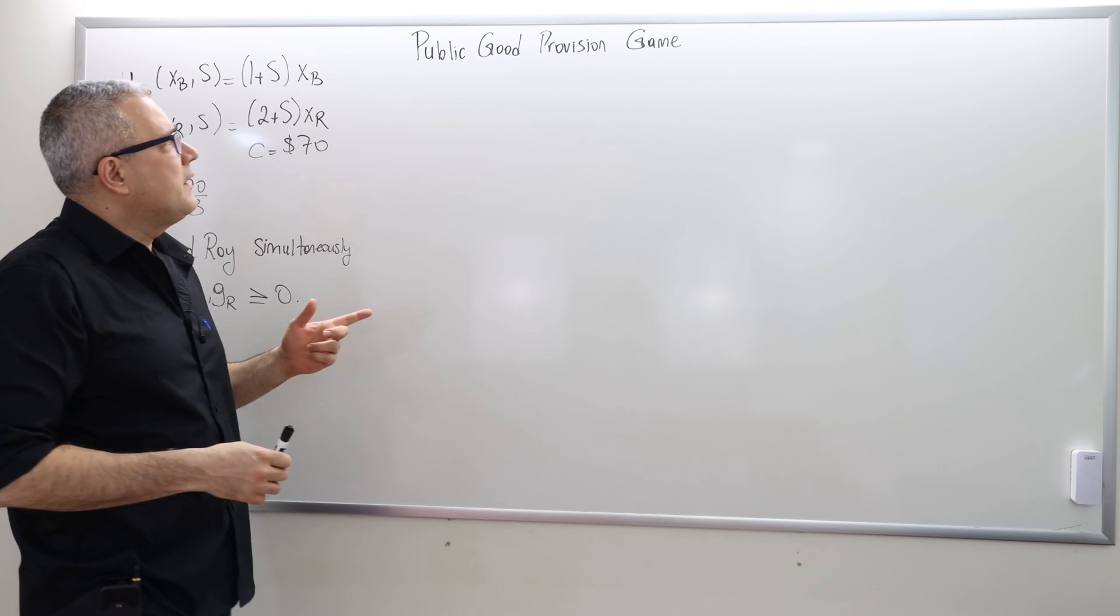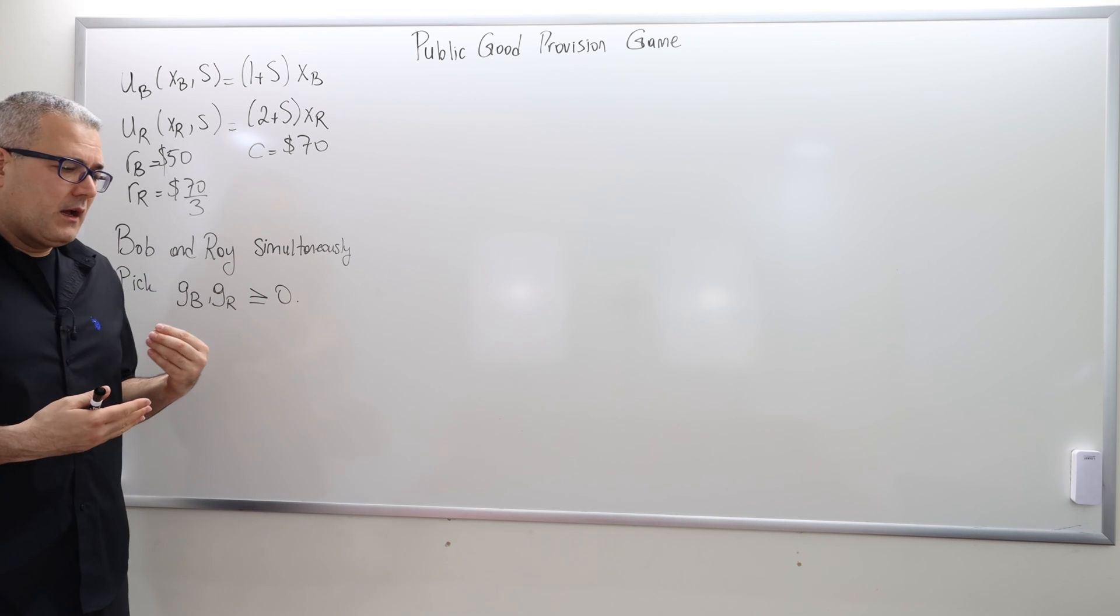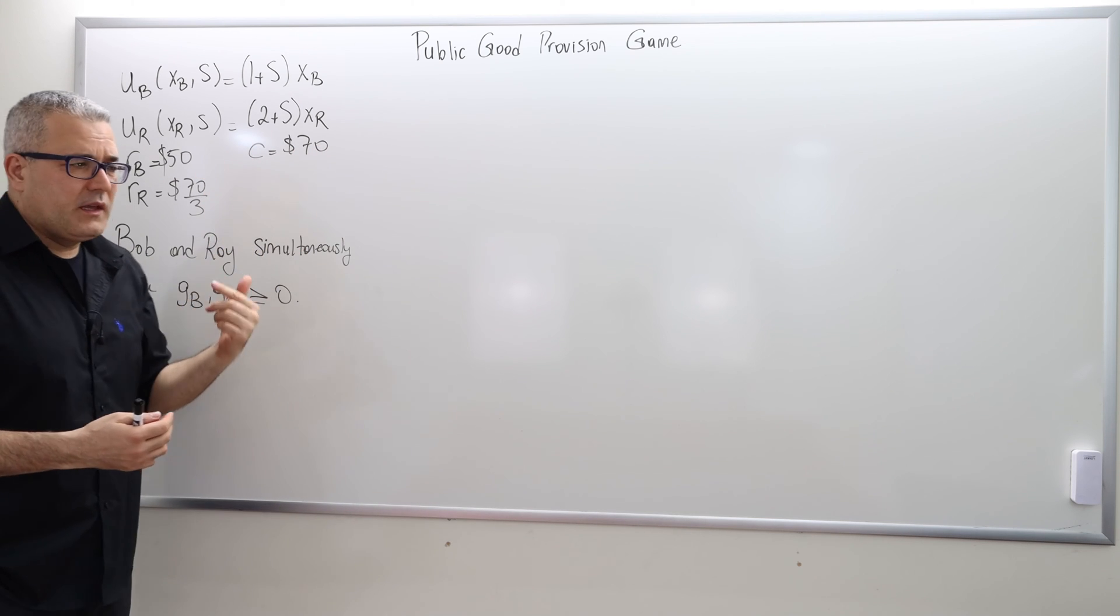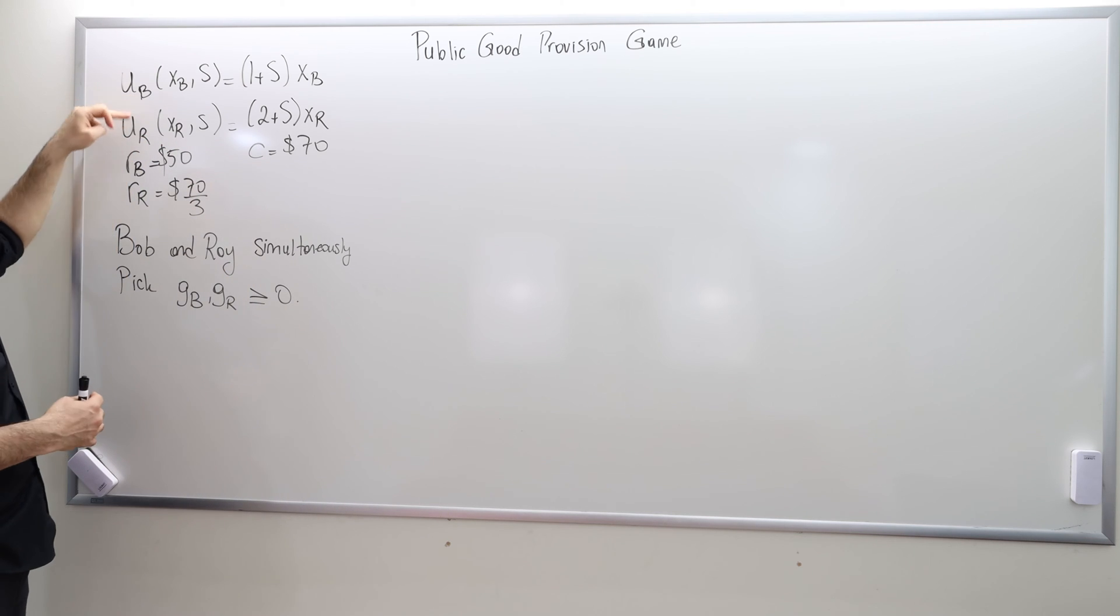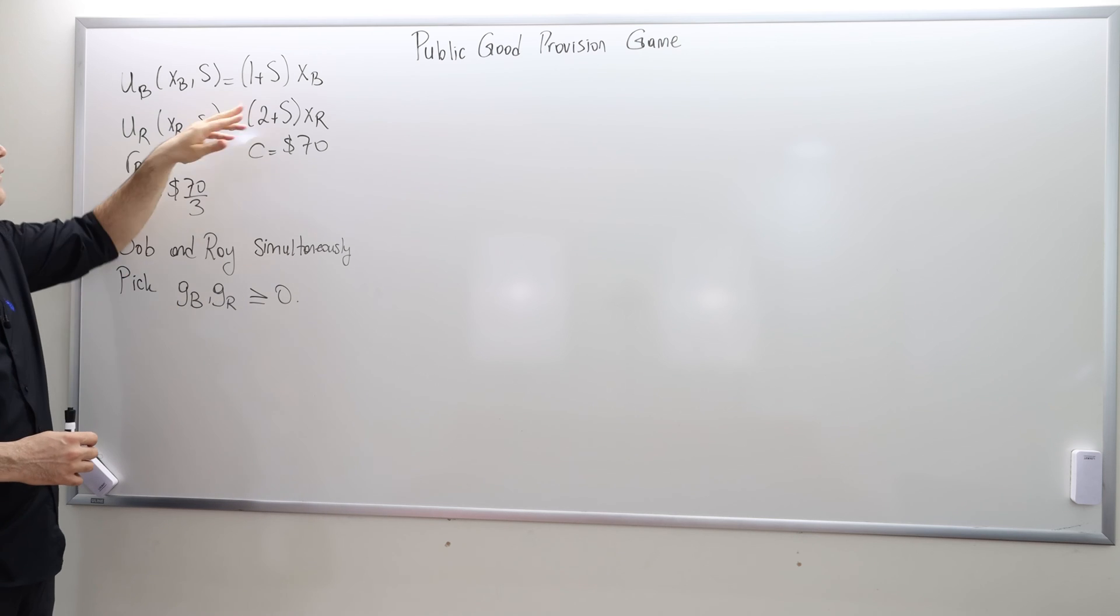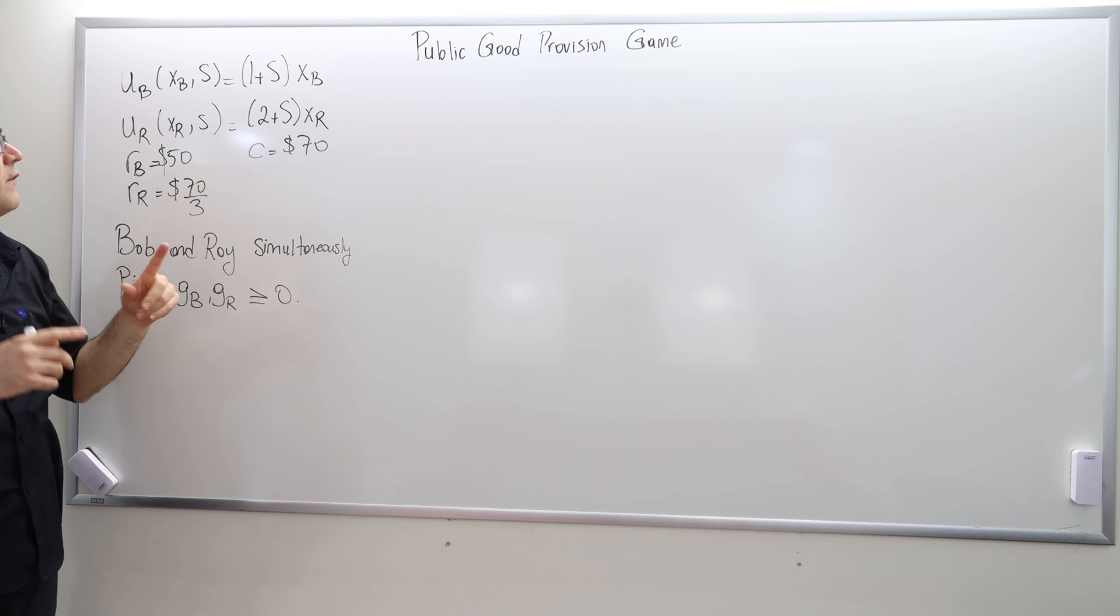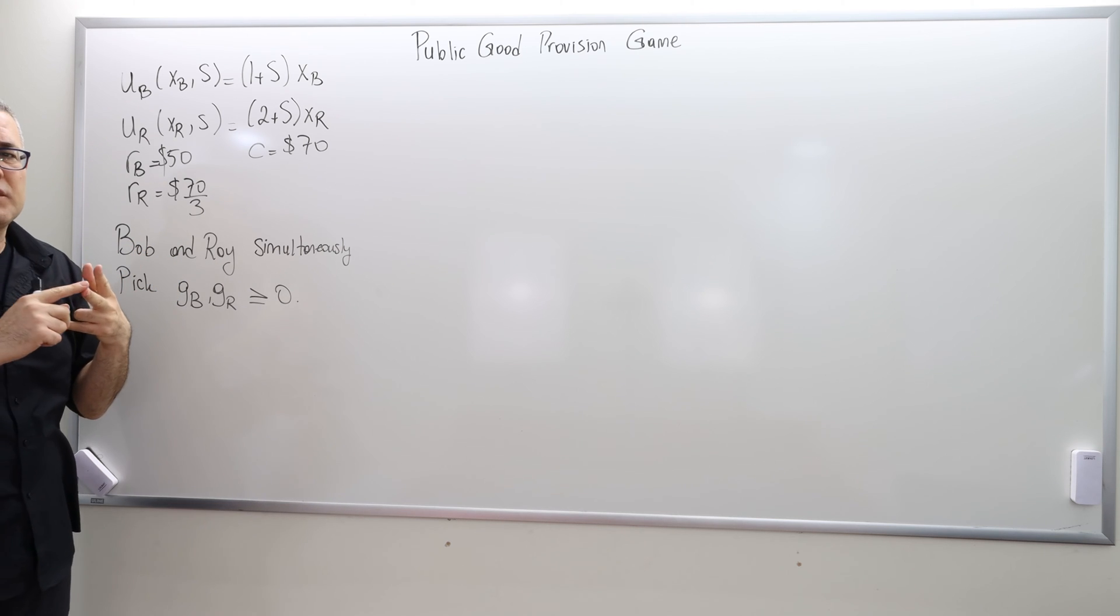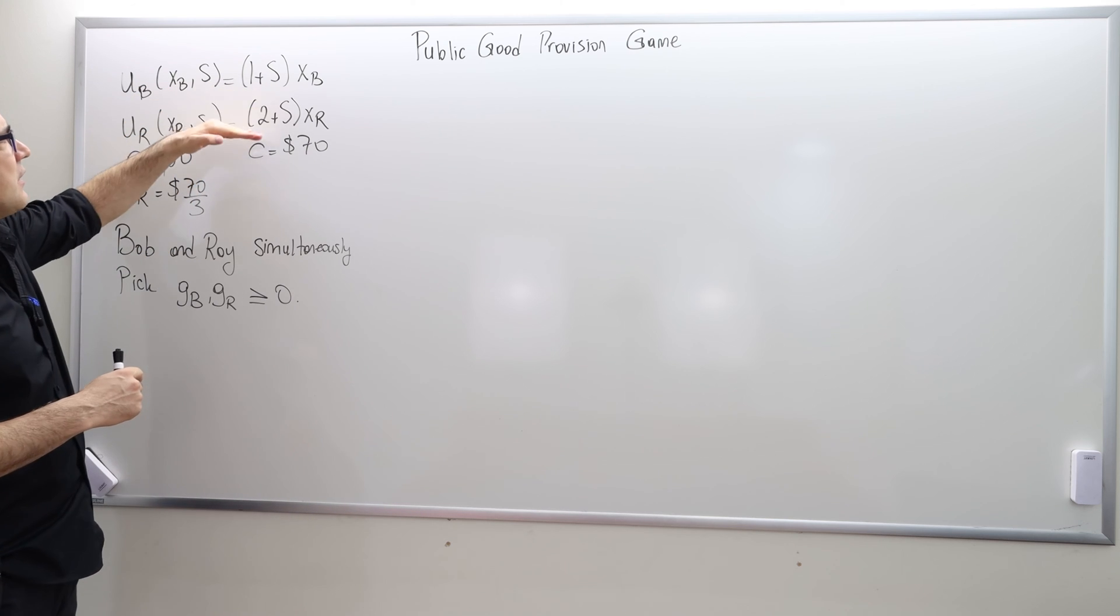Alright, so in this video I'm going to talk about public good provision game. If you remember the example we were discussing, two agents Bob and Ray, they have utilities over two goods. One of them is public good, the sofa, and the other one is the private good consumption.